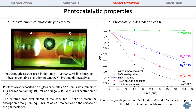The photocatalytic reactor used in this study is composed of a 300-watt visible lamp and a beaker containing a solution of Orange G dye and the photocatalyst. The photocatalytic activity was enhanced in the case of the RGO ZNO composite, which is attributed to the improvement of the separation of photogenerated charge and the extended light absorption range.